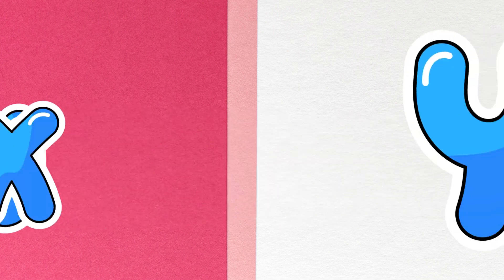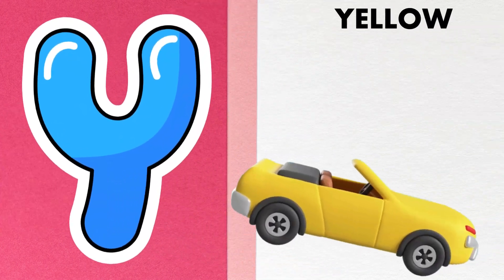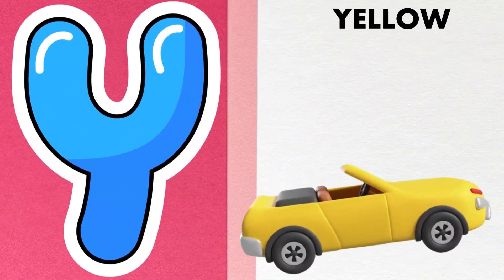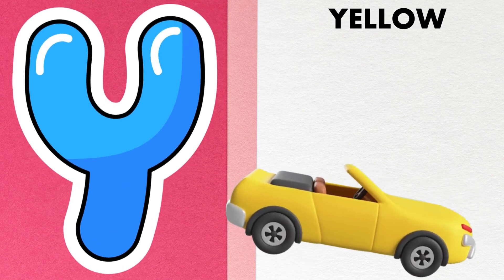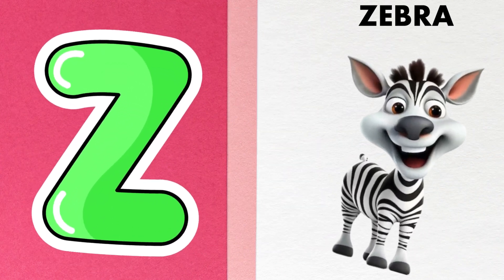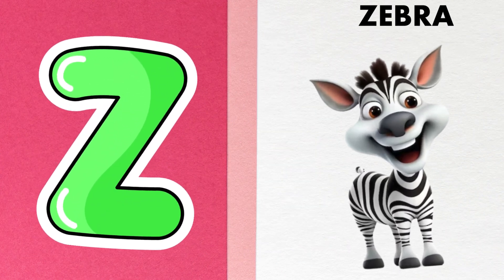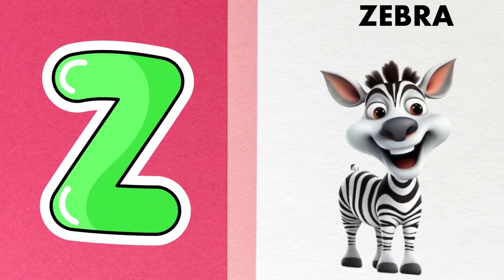Y is for yellow, ye-ye-yellow. Z is for zebra, z-z-zebra.